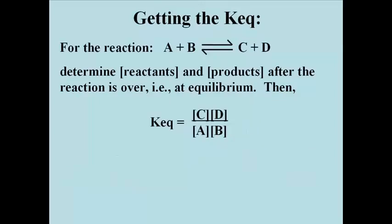Let's talk about getting the equilibrium constant. Assume the generic reaction shown here. When that reaction is over, that is to say, when it reaches equilibrium, we would assay the concentrations of the reactants and or the products. The equilibrium constant for this reaction is the product of the concentrations of the products divided by the product of the concentrations of the reactants, as shown in the equation.